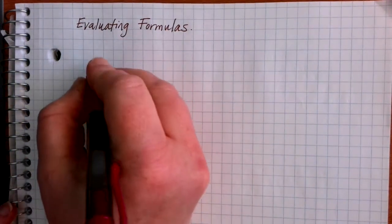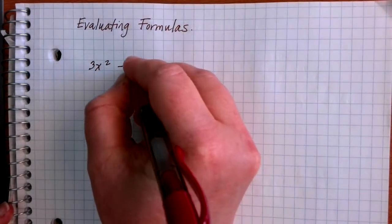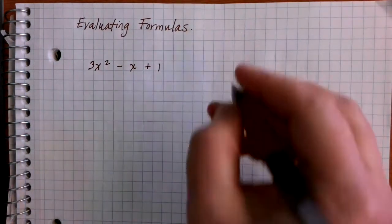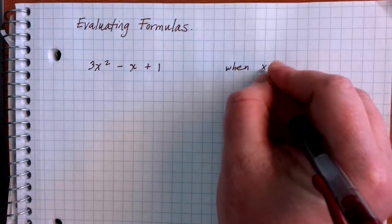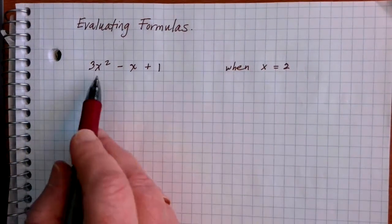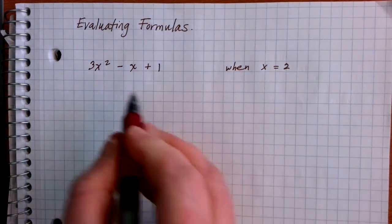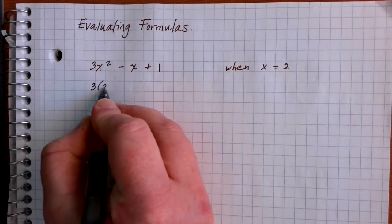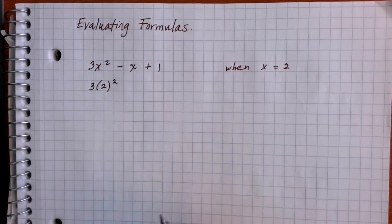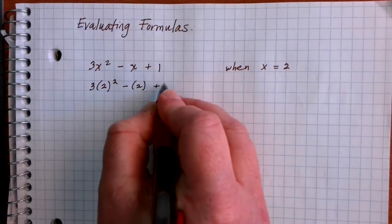Let's suppose that we have a formula that looks like this: 3x squared minus x plus 1, and we want to figure out what this value represents when x is equal to 2. When we're looking at a formula, this is our rule — every time that we see an x we're going to replace it with the number we're given. So I have 3 times 2, instead of x, squared, minus 2, plus 1.